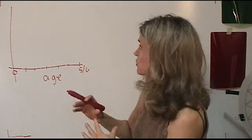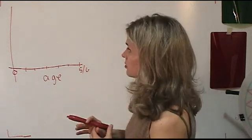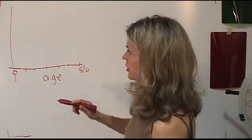Birth to age five or six is really the critical vision development time, and I'll explain that a little bit more in detail, but let me show you what's supposed to happen at birth here.